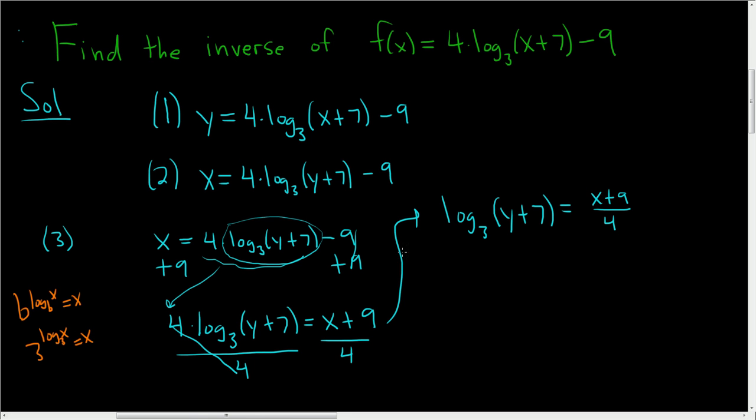So here we have a log base 3, so we'll put a 3 here, and we'll put a 3 here. And this is in parentheses. This is the exponent. So on the left-hand side, we just get y plus 7. And on the right-hand side, we have 3 to the x plus 9 divided by 4.